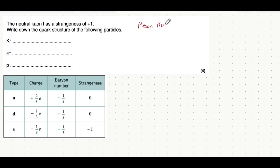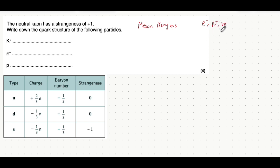Just a quick reminder: if you are ever given a lepton, that's a trick question, because leptons are fundamental particles — they can't be broken down into quarks. Examples of leptons include electrons, muons, and neutrinos, or their antiparticles: positrons, antimuons, and antineutrinos.